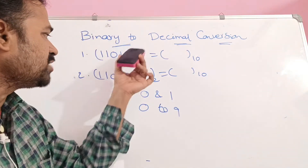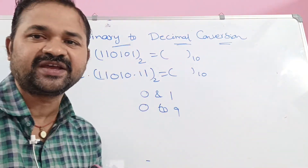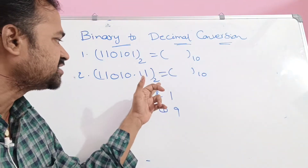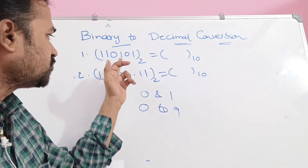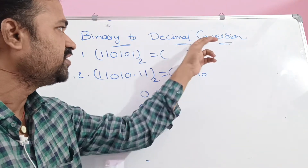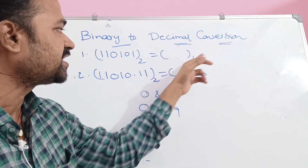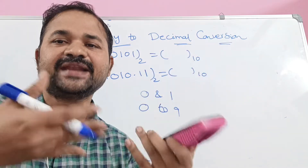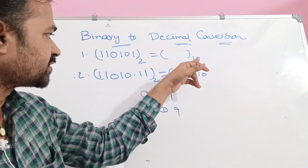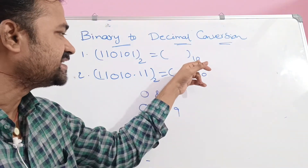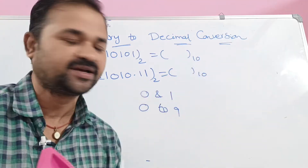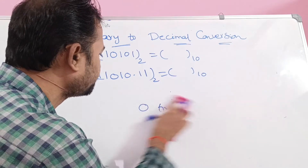So here 2 examples are given. Binary means the base value is 2, and for these 2 examples we have to construct the corresponding decimal number. For the decimal number, the base value is 10. Let us see the first example.